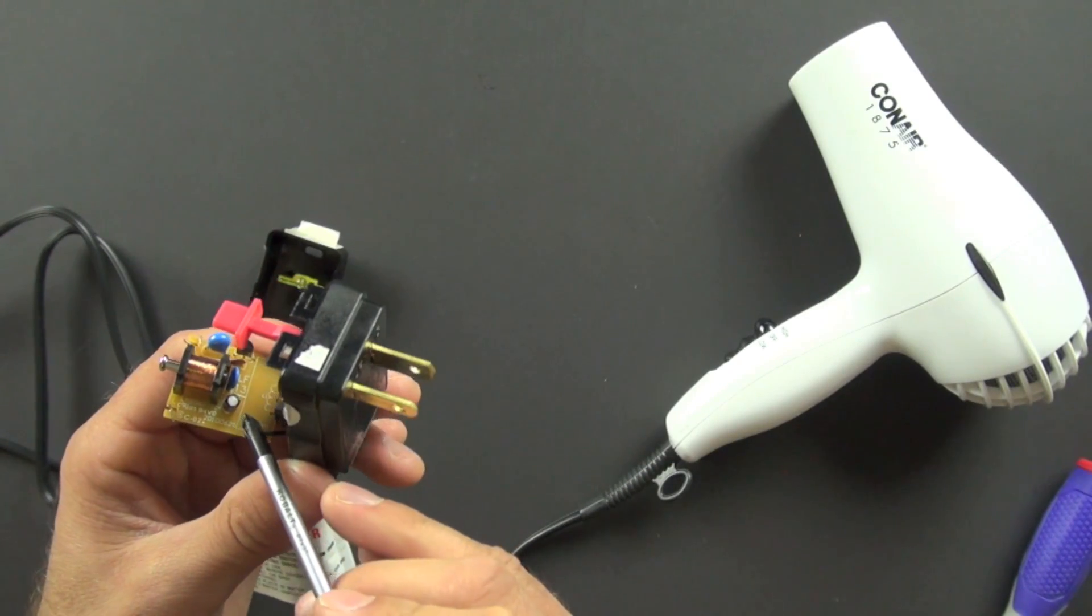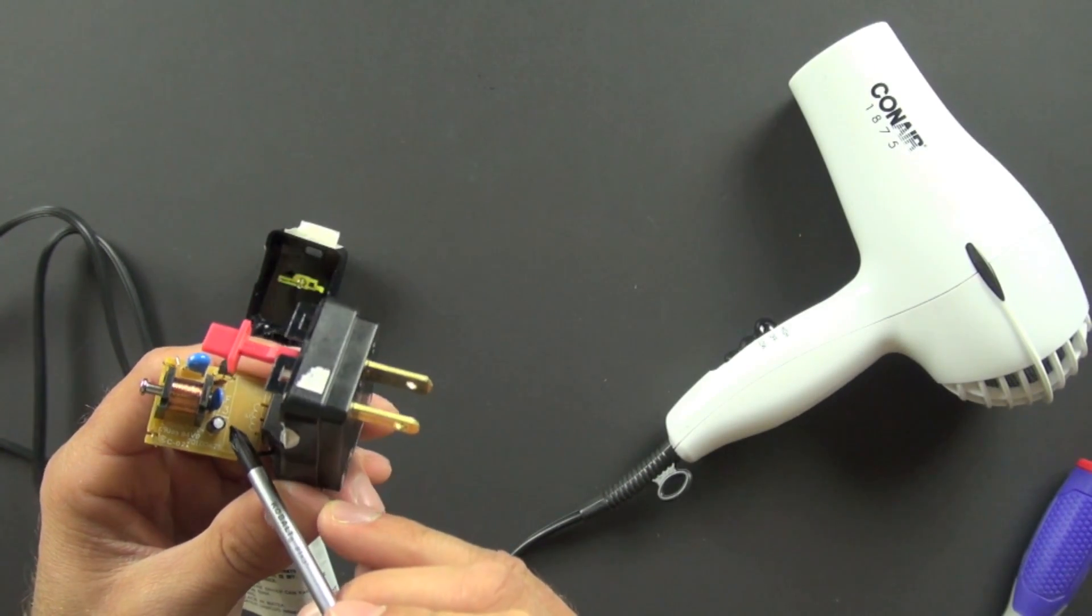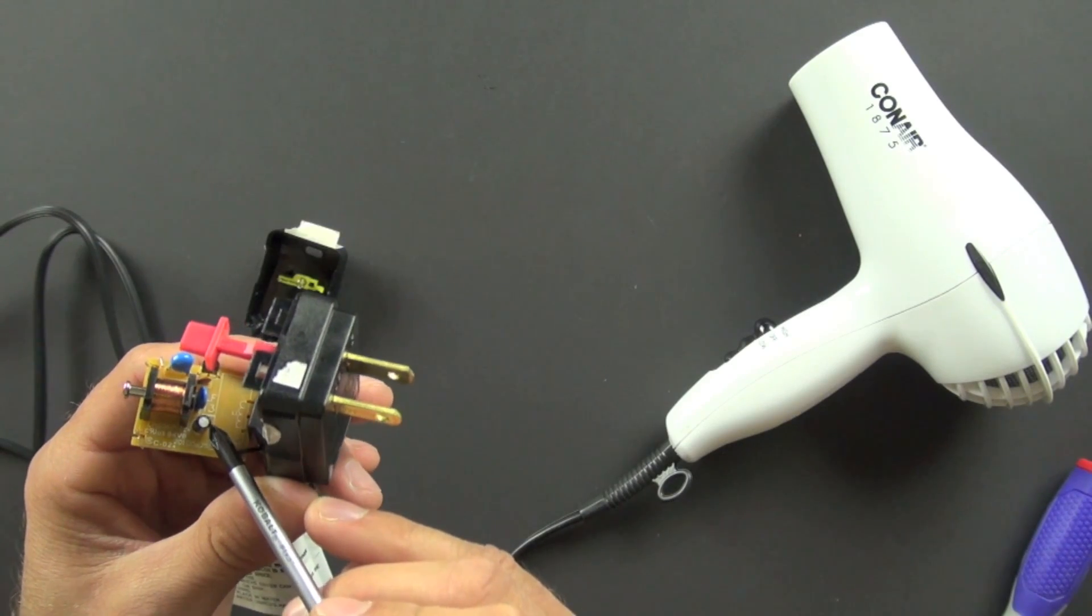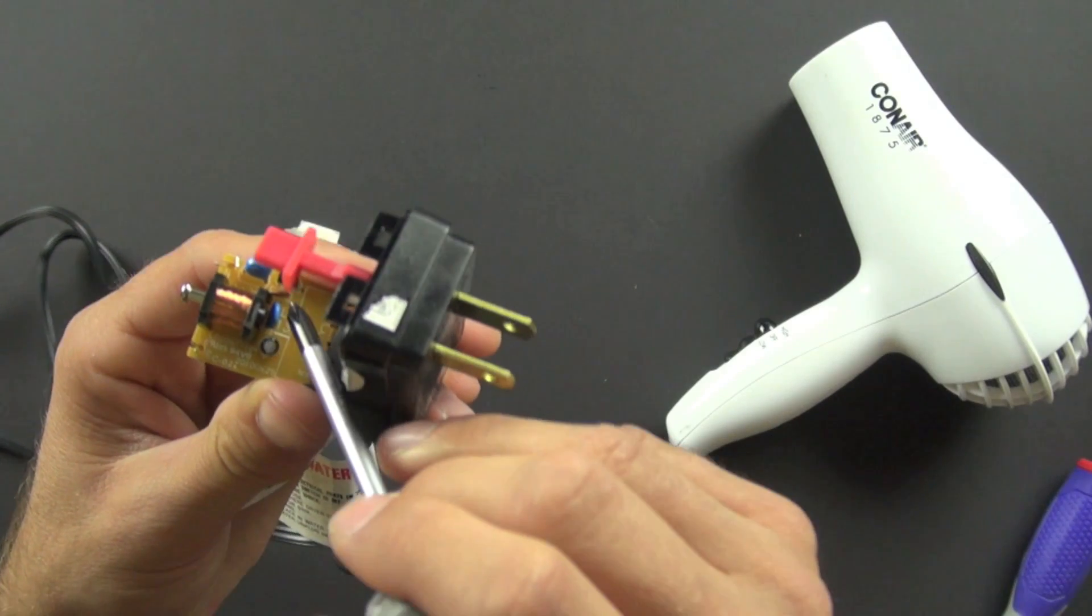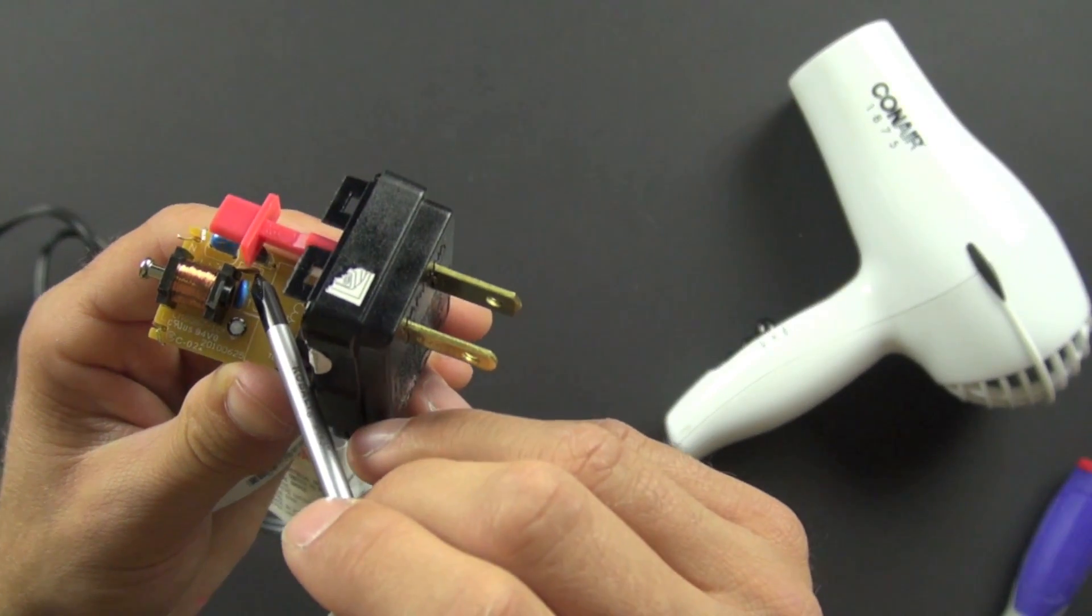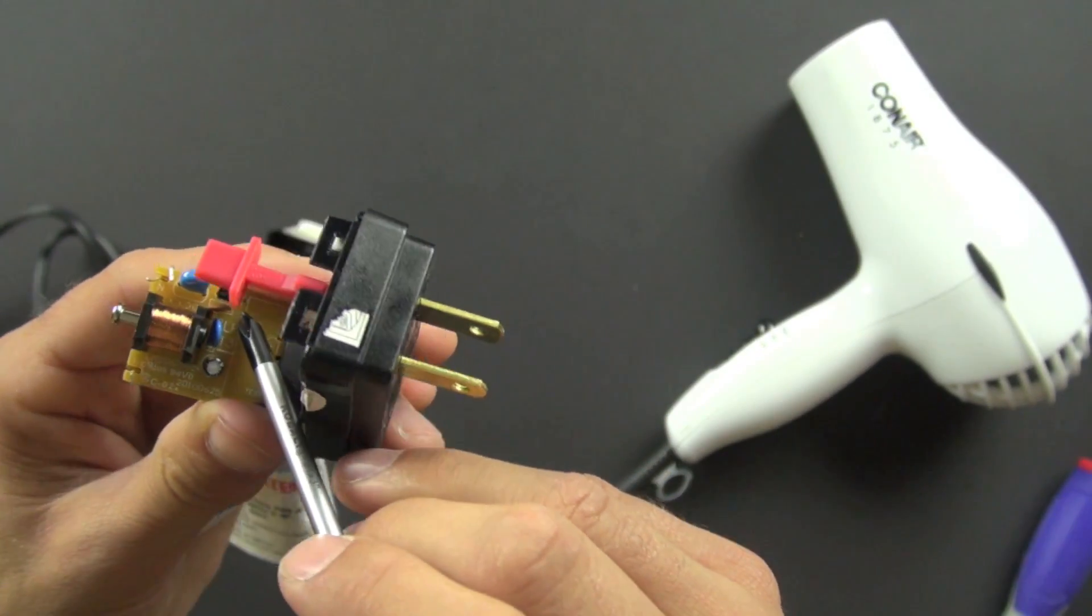And there's a couple really neat and interesting parts on this board. We've got a dielectric capacitor. And then we have another capacitor right here. And you can see right here, this is a ceramic capacitor, this little sort of rust colored one.